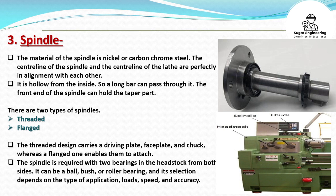The spindle is supported with two bearings in the headstock from both sides. It can be a ball, bush, or roller bearing, and its selection depends on the type of application, loads, speed, and accuracy.